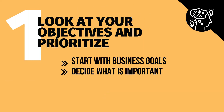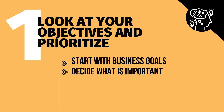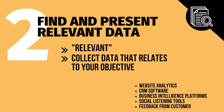Look at your objectives and prioritize. Any decision you make needs to start with your business goals at the core. So start by asking yourself: what goals do you want to improve? Begin with the most important when you are making decisions. Once you have identified the problem you want to solve and the decision you're going to make, it's time to find and present relevant data. It's important to stress that the word 'relevant' is key here — you don't want to spend hours analyzing data that won't have any impact on your final decision. So keep the data relevant and only collect the data that relates to your objective.